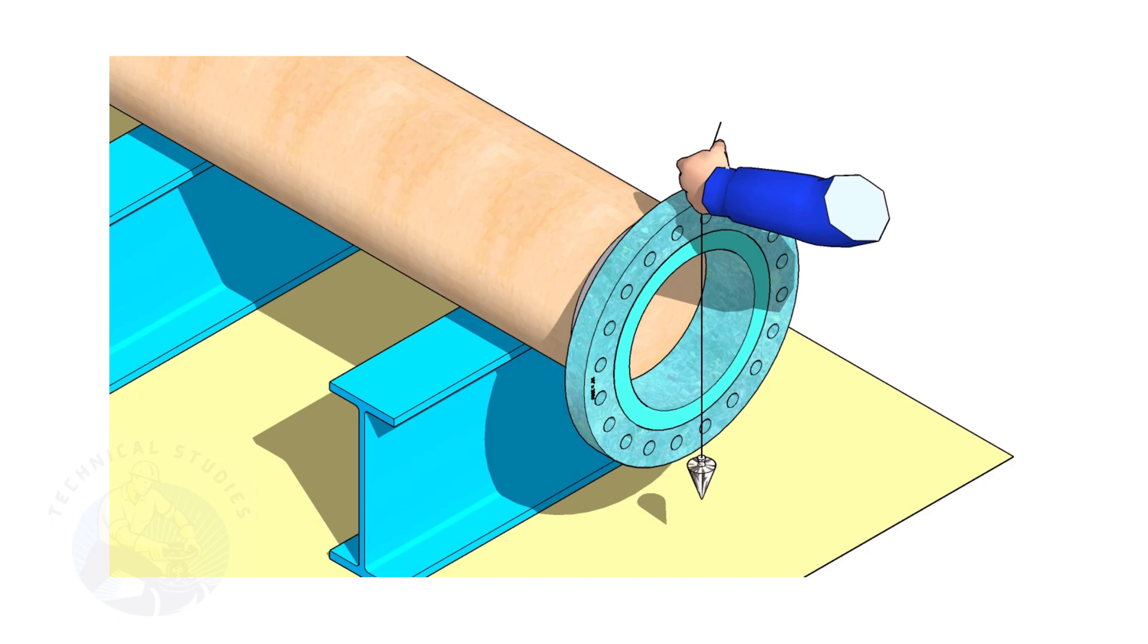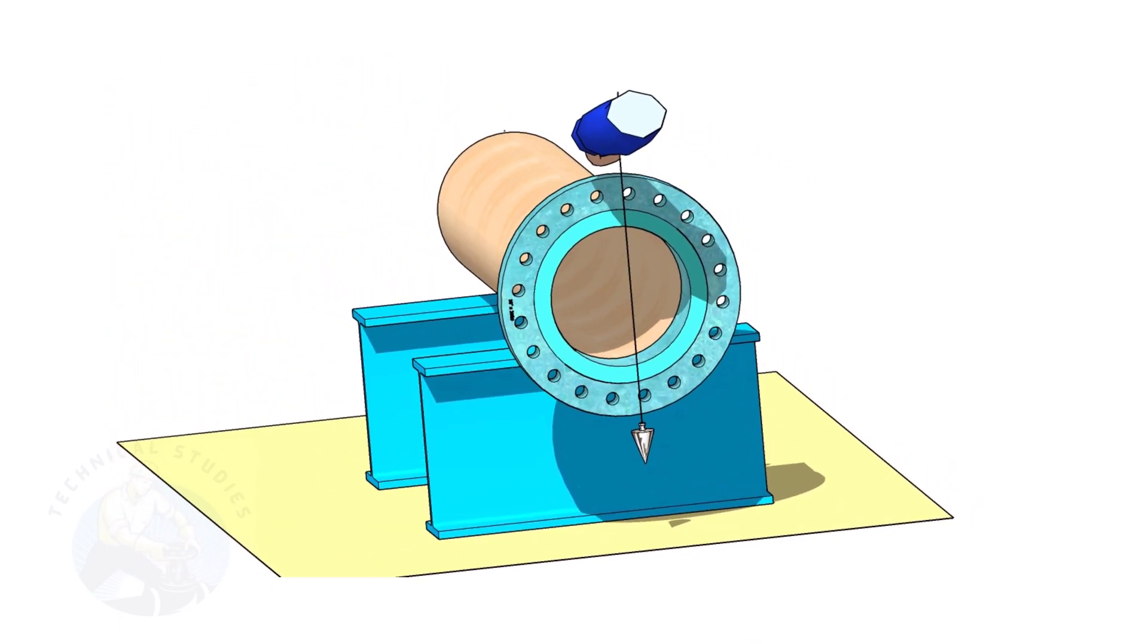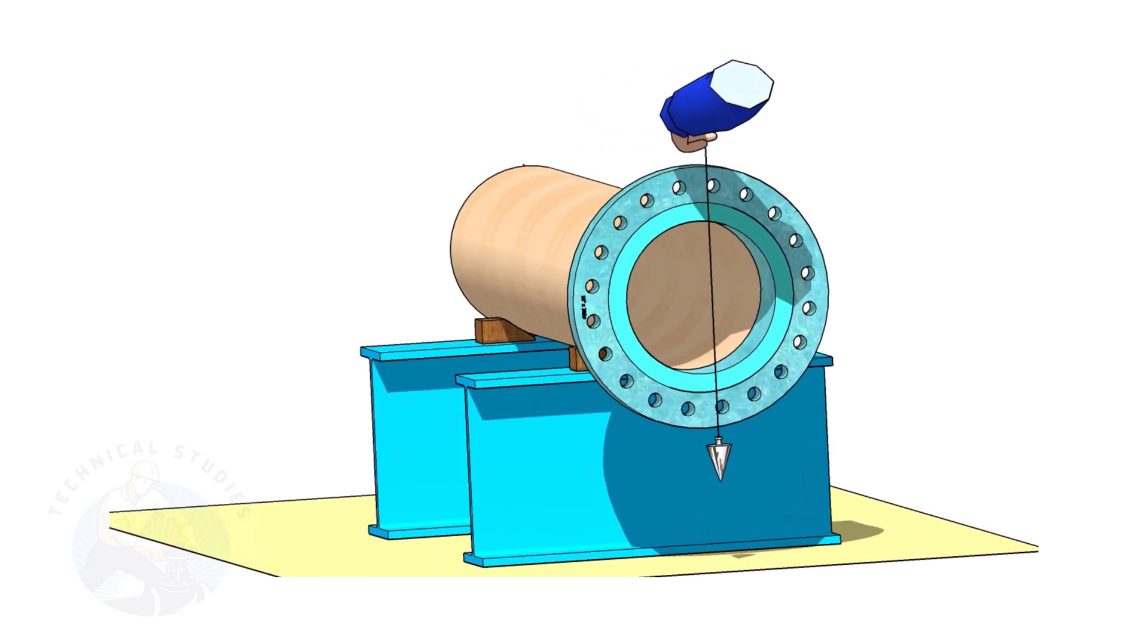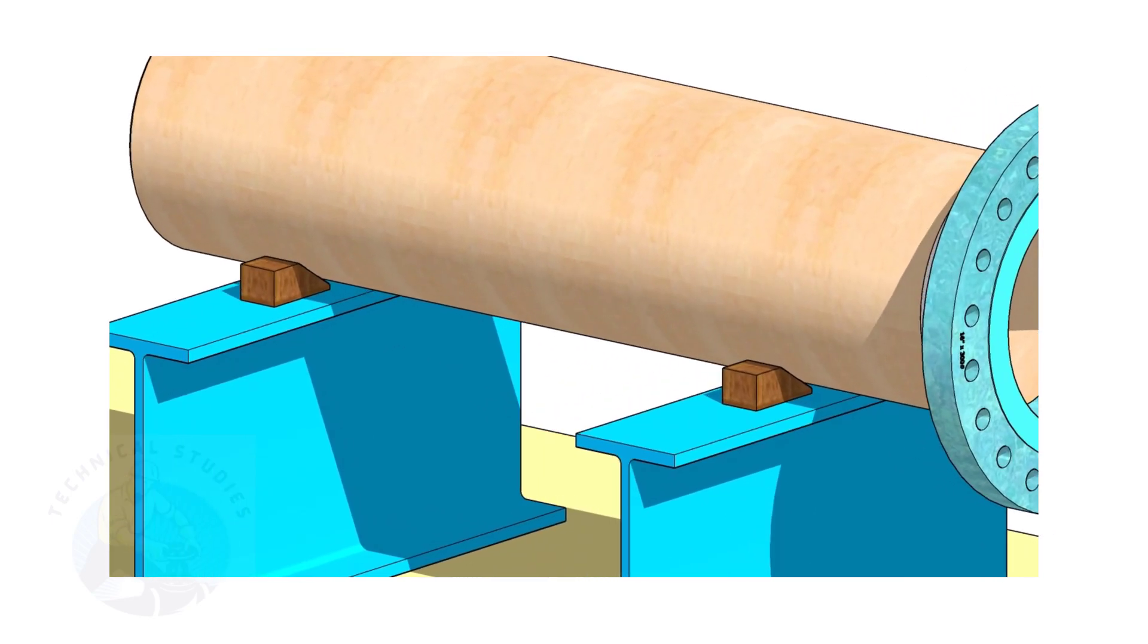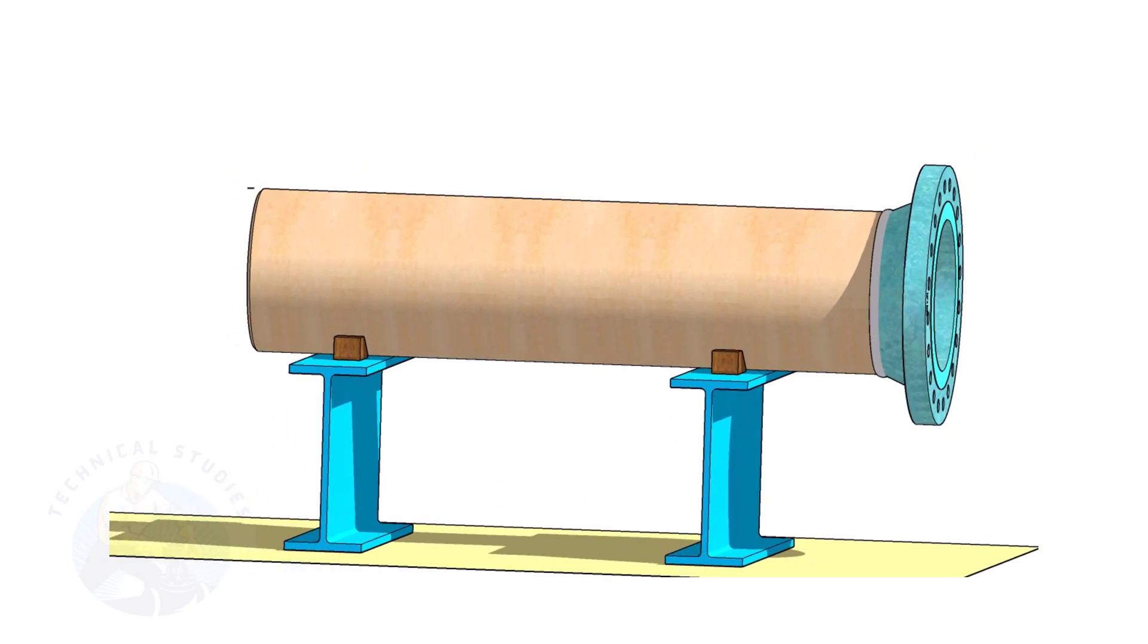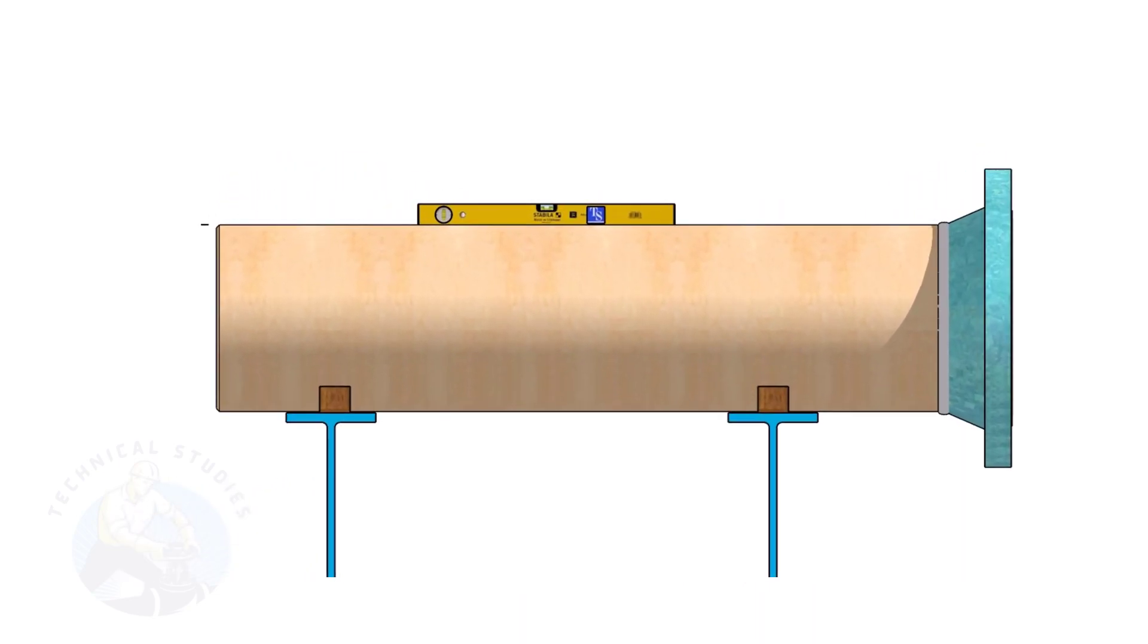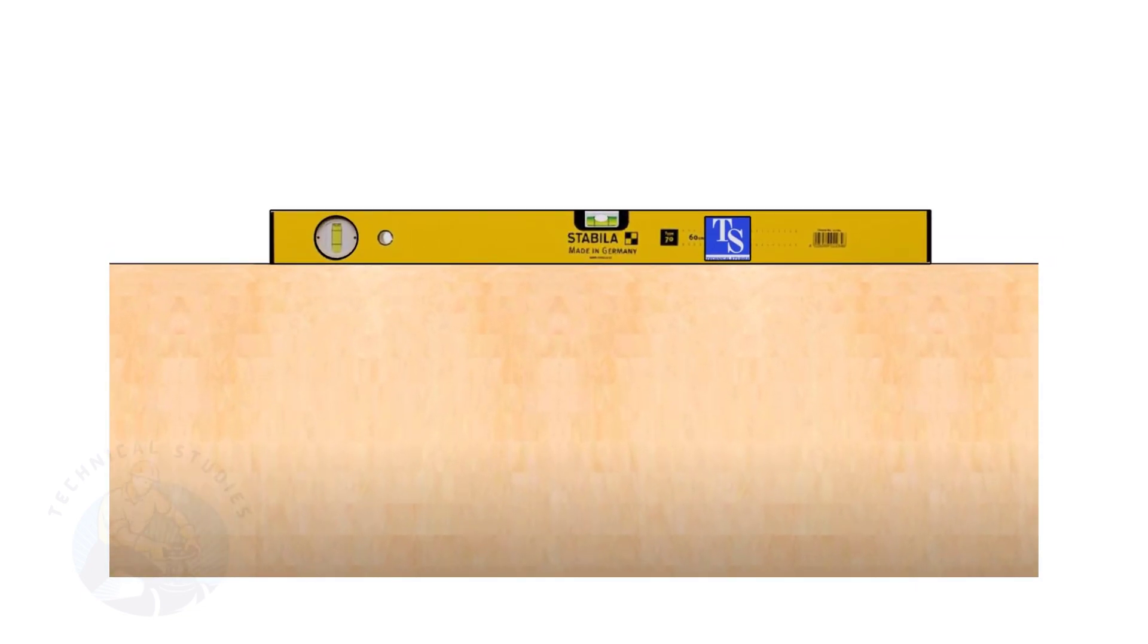Choose a set of holes closer to the center of the flange. This will ensure more accuracy. Provide proper supports on both sides of the pipe to prevent rotation. Correct the level of the pipe. Check the plumbness of the flange a second time.